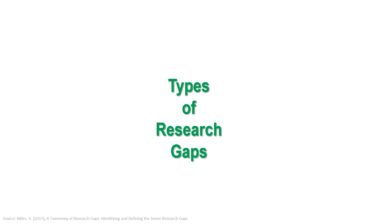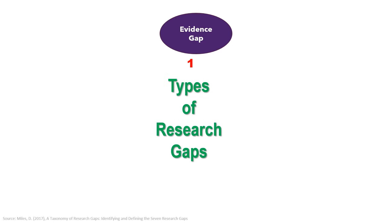Research gaps should be systematically arranged and categorized according to their utility. Researchers now possess a fundamental structure for recognizing them in the literature. For example, Miles 2017 proposed a model comprising seven research gaps. Let's examine each of the categories to understand these types of research gaps.